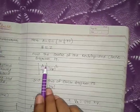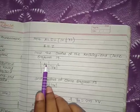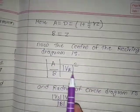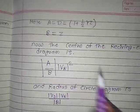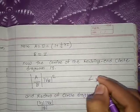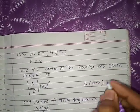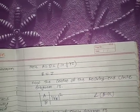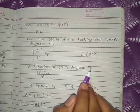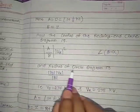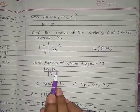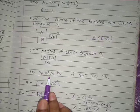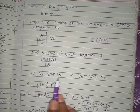The center of the receiving end circle diagram is given by (|A|/|B|) × Vr² at an angle β − α, plotted in the negative megawatt direction. The radius of the circle diagram is Vs × Vr / |B|. We already know that the sending end voltage Vs = 275 kV and the receiving end voltage Vr = 275 kV.